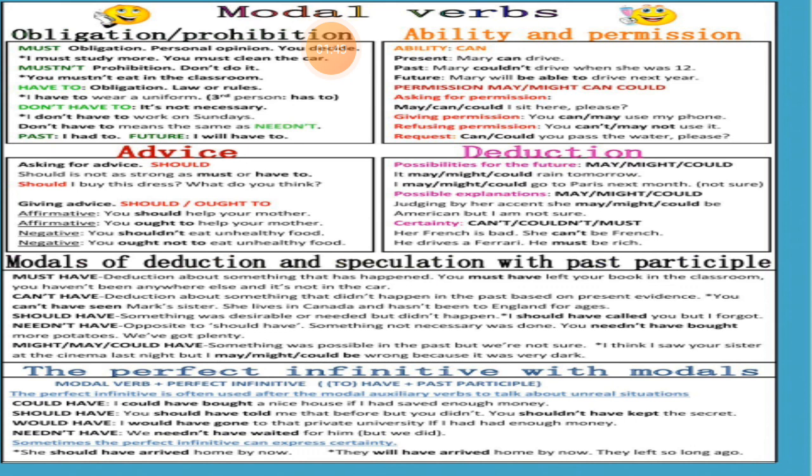Here again is chart number 3, in which the obligation and prohibition modal verbs are given: 'must,' 'must not,' 'have to,' 'don't have to,' and 'need not.' These are all given to you. They indicate obligation — 'must,' 'have to' — and lack of obligation — 'don't have to,' 'need not,' 'I had to.'